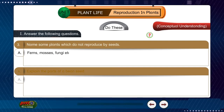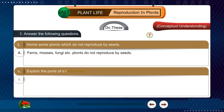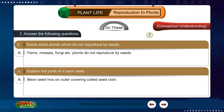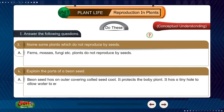fungi, etc., are plants that do not reproduce by seeds. Question 4: Explain the parts of a bean seed. Answer: A bean seed has an outer covering called the seed coat. It protects the baby plant. It has a tiny hole to allow water to enter.